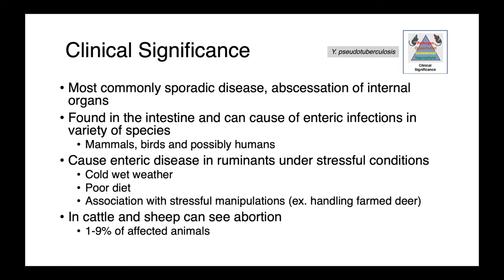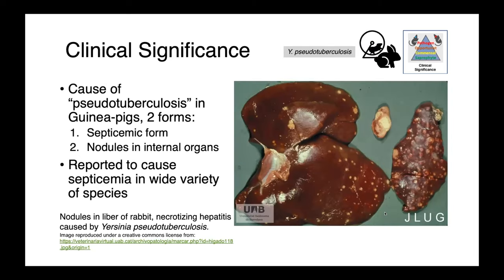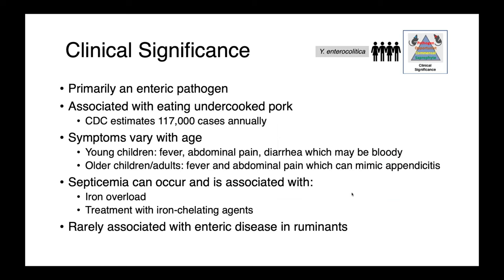In cattle and sheep, abortion is also a possible manifestation. Yersinia pseudotuberculosis causes pseudotuberculosis in guinea pigs, which occurs in two forms: a septicemic form and more focal infections with nodules in internal organs. Here you can see the liver of a rabbit with necrotizing hepatitis caused by Yersinia pseudotuberculosis — you can appreciate all of these multifocal to coalescing white nodules, which are these abscessions. Yersinia pseudotuberculosis is also reported to cause septicemia in a wide variety of species.